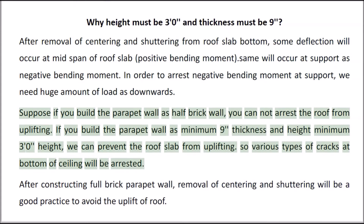Suppose if you build the parapet wall as a half brick wall, you cannot arrest the roof from uplifting. If you build the parapet wall with a minimum 9-inch thickness and minimum 3-foot height, we can prevent the roof slab from uplifting. So various types of cracks at the bottom of the ceiling will be arrested.